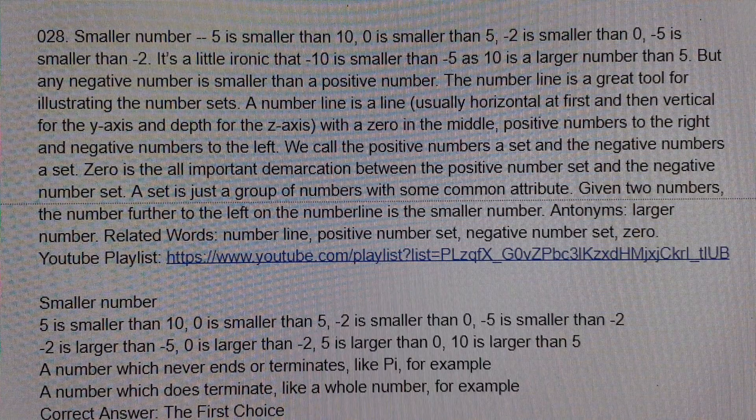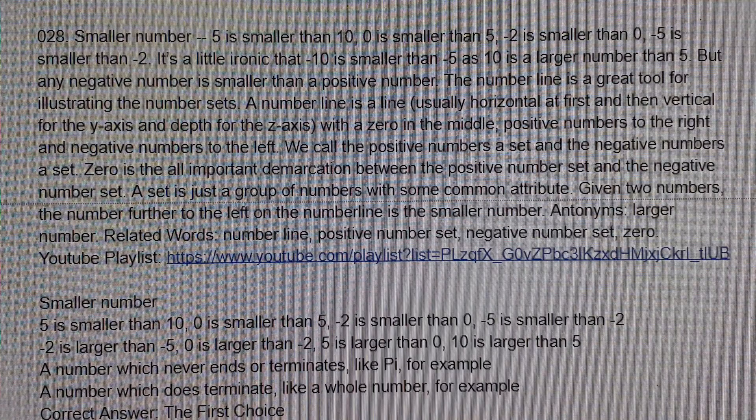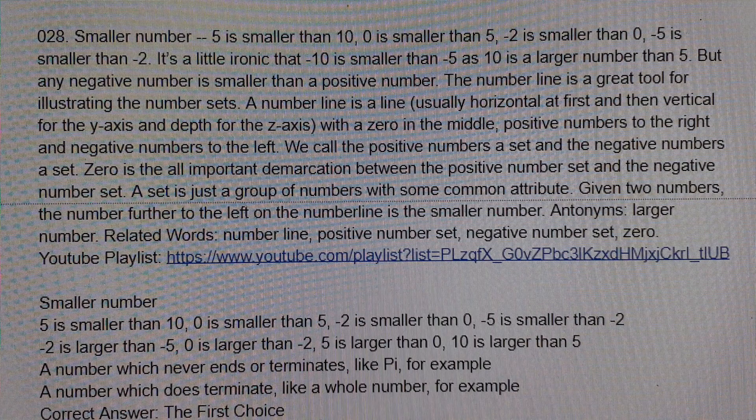A set is just a group of numbers with some common attribute. Given two numbers, the number further to the left on the number line is the smaller number.